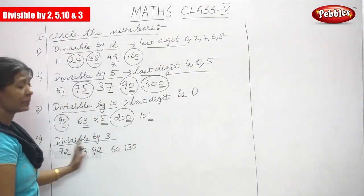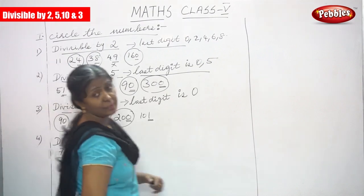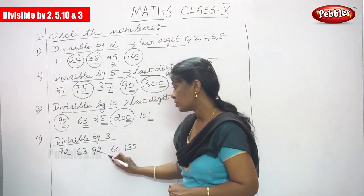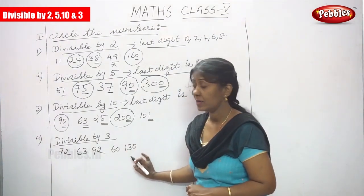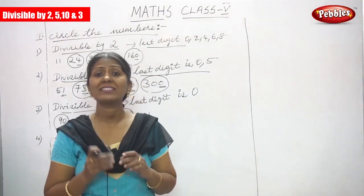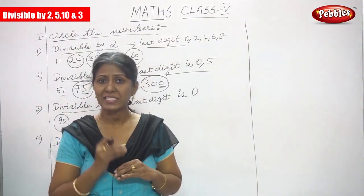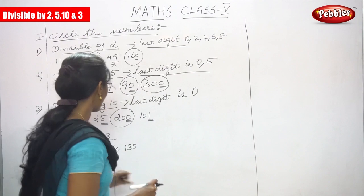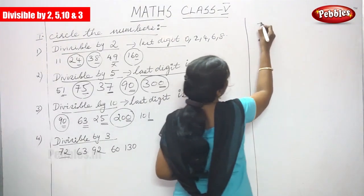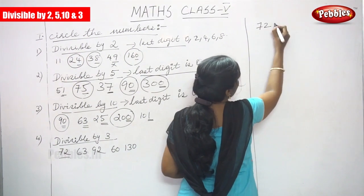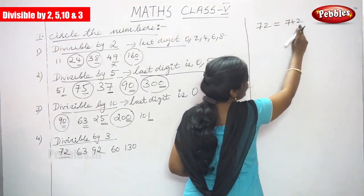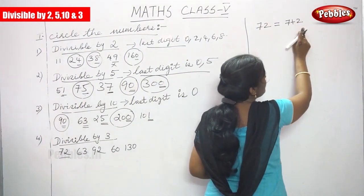Fourth sum: divisible by 3. The numbers are 72, 63, 92, 60, 103. The rule is: if the sum of the digits is divisible by 3, the number is divisible by 3. For 72: 7 plus 2 equals 9, and 9 is divisible by 3, so 72 is divisible by 3.